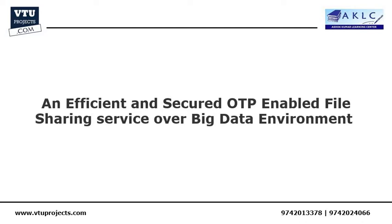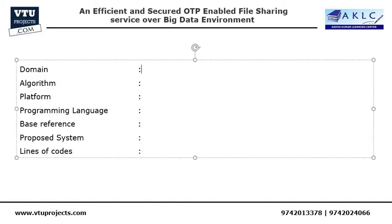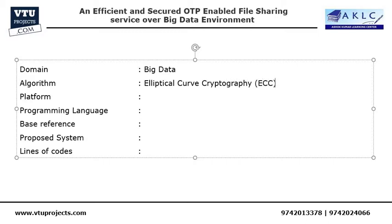This project is titled 'An Efficient and Secured One-Time Password Enabled File Sharing Service over Big Data Environment.' It falls under the big data domain, and in this project we will be making use of Elliptic Curve Cryptography (ECC) algorithm, which is one of the asymmetric algorithms. We are going to implement it from scratch and combine it with the One-Time Passcode (OTP) algorithm to provide a solution.